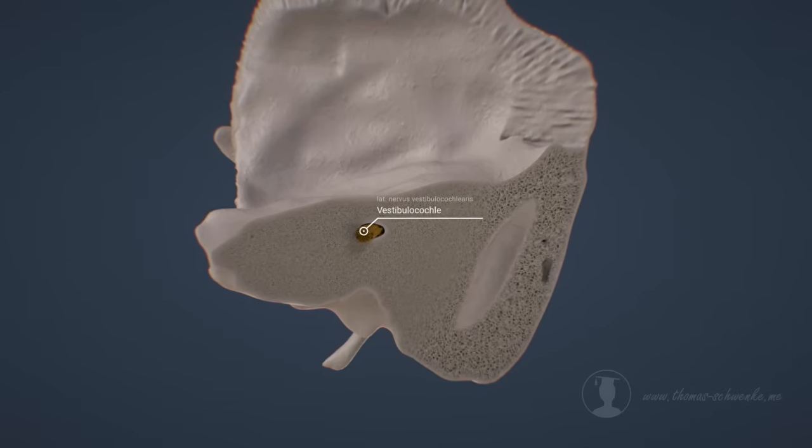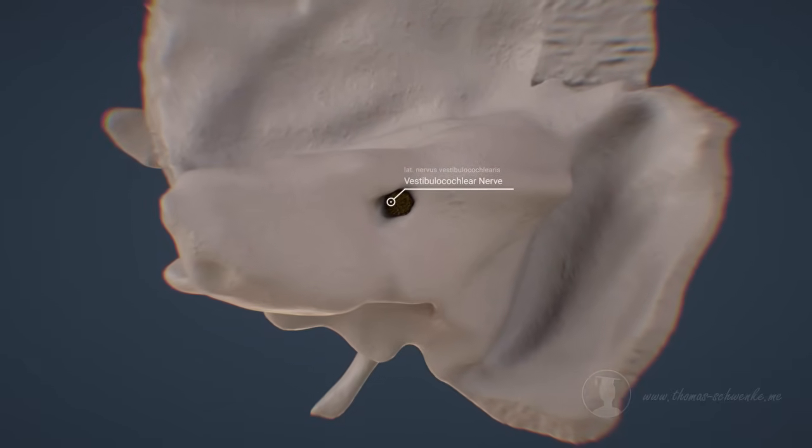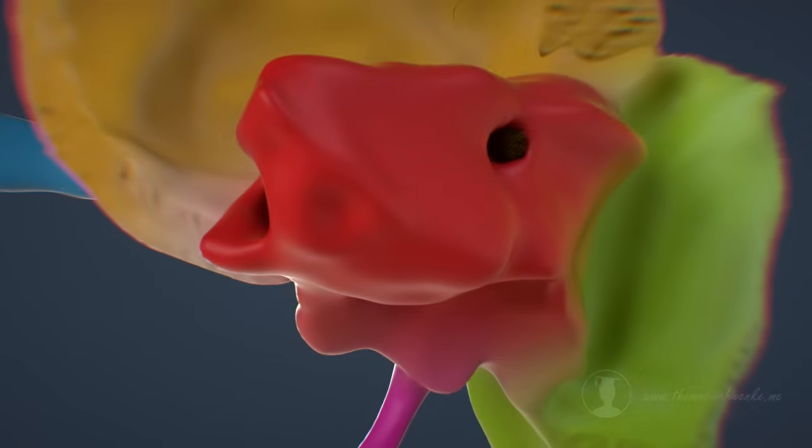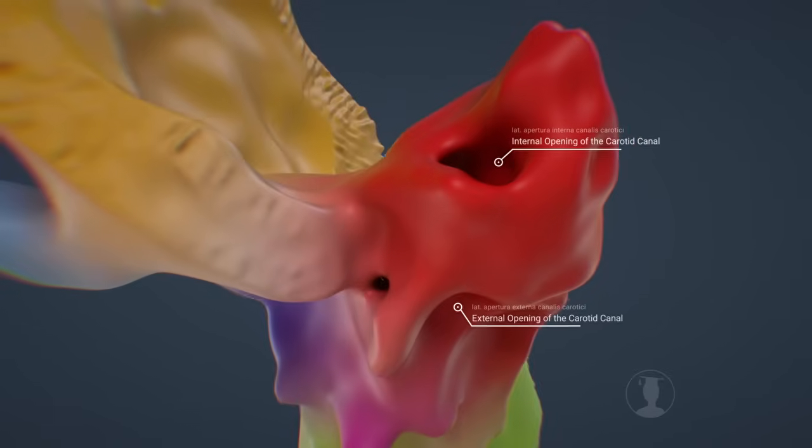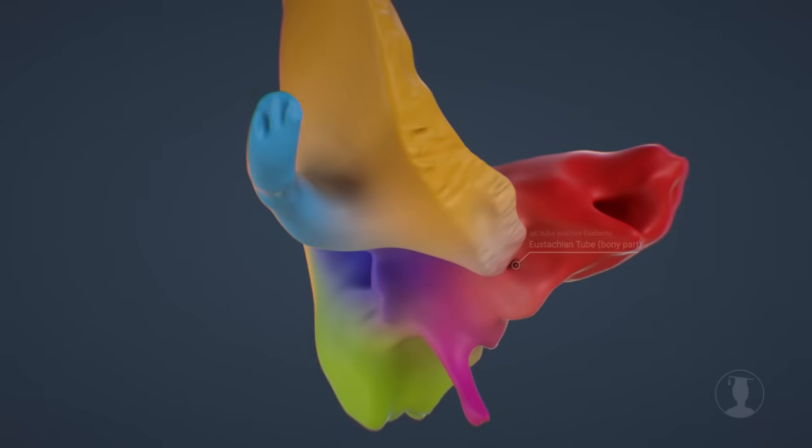The petrous part of the temporal bone has numerous bone canals. This allows important nerves to reach the inner ear, for example. Canals for blood vessels and the connection between the ear and nasal cavity are also part of the petrous temporal bone.